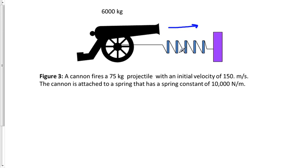The cannon is attached to a spring because this thing is going to recoil back this way. So this will be the recoil and this of course is the projectile being launched this way.